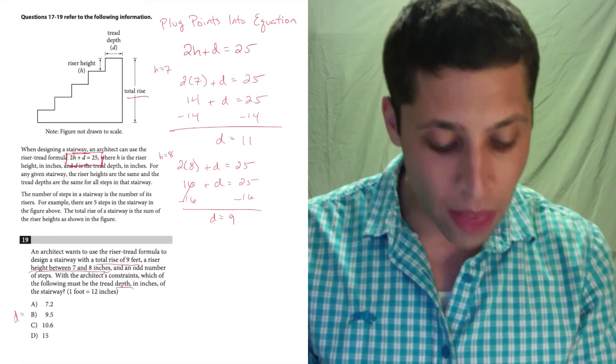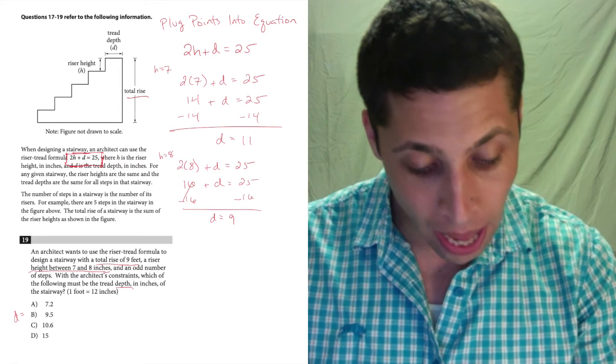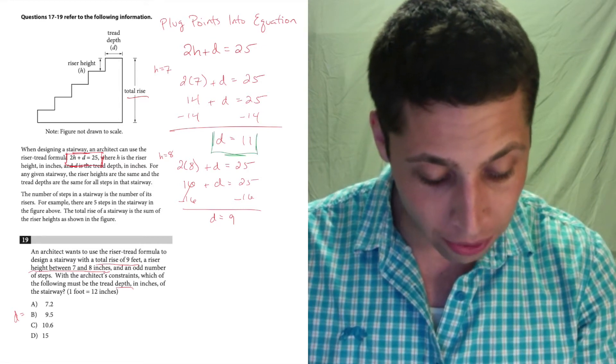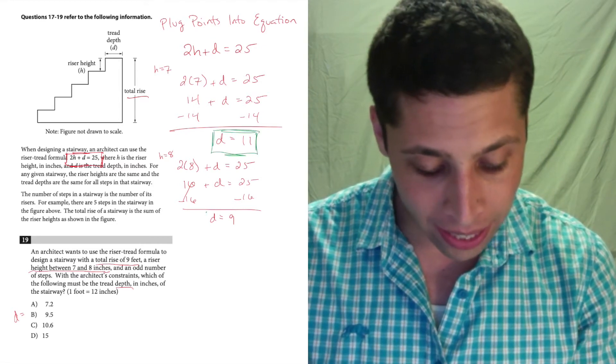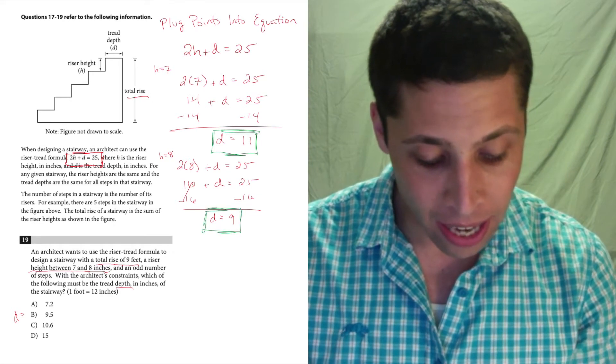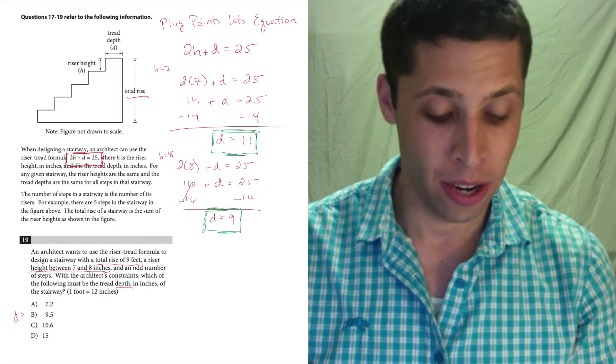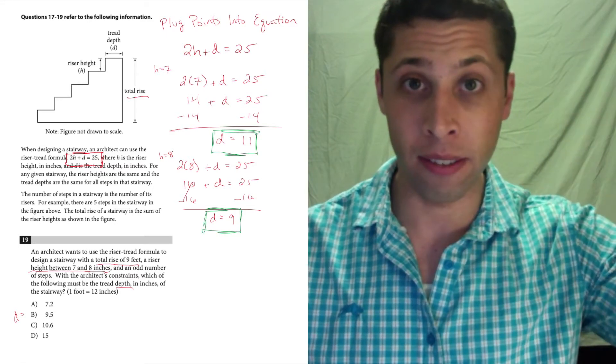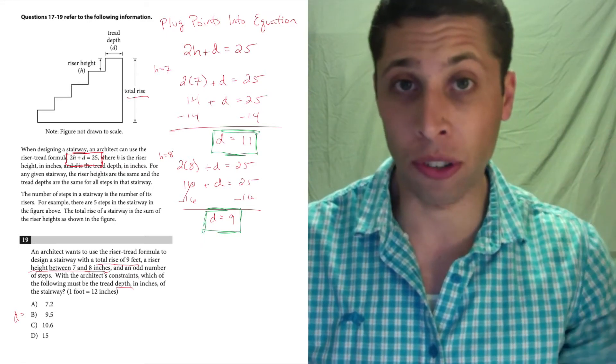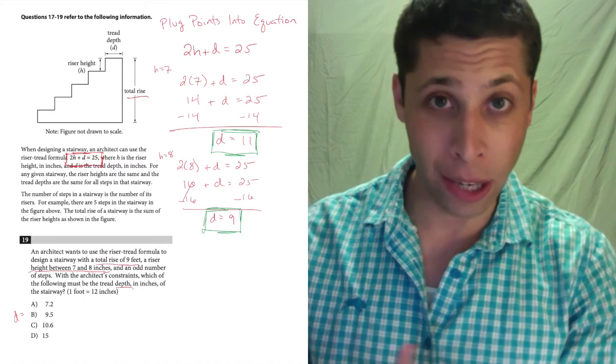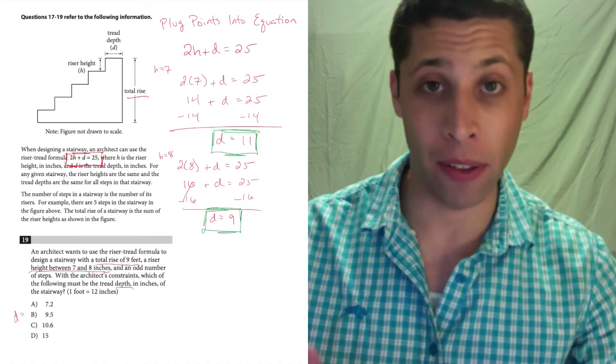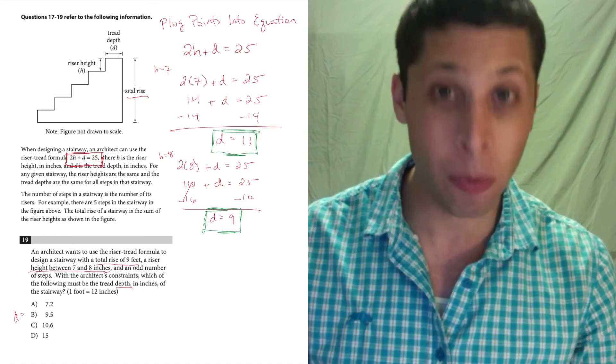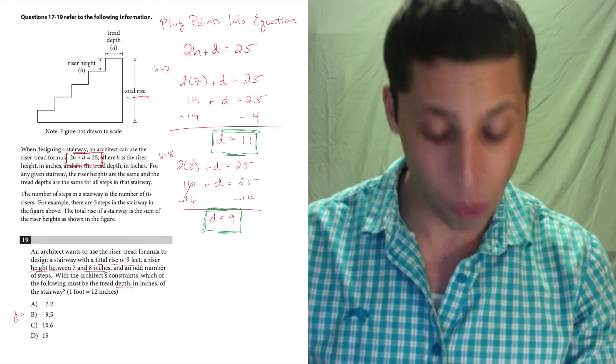If I know that d can be at most 11 and at least 9, I've got kind of a range here. When the height was at its lowest, 7, I found that d could be at its highest, which is 11. And when h was at its highest, 8, we found the lowest value for d, 9. So basically anything outside of this range is wrong.